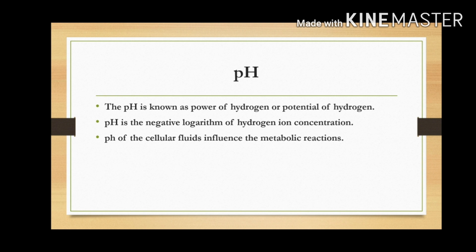pH — 'p' stands for the power or potential of the hydrogen. pH is also known as the negative logarithm of the hydrogen ion concentration.